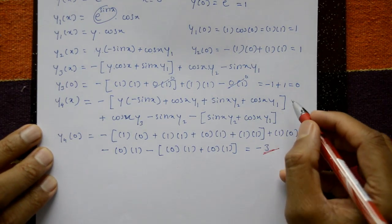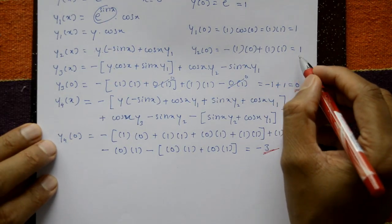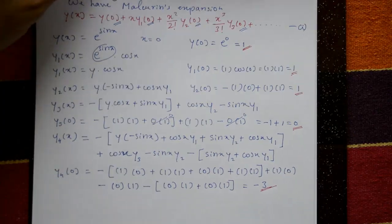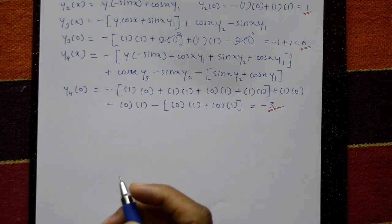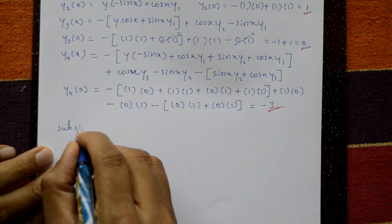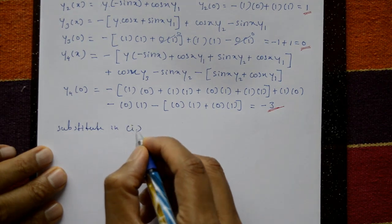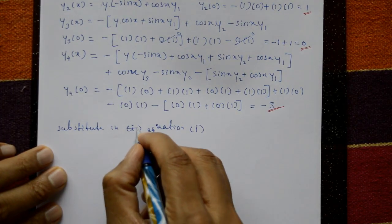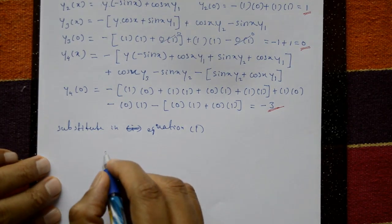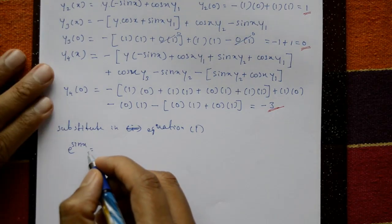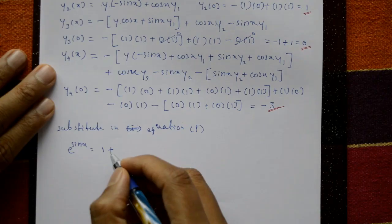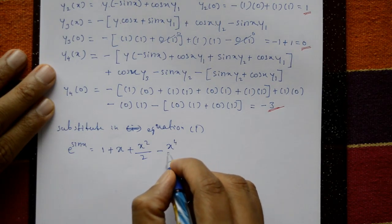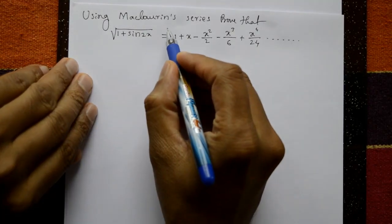Now substitute y(0) = 1, y1(0) = 1, y2(0) = 1, y3(0) = 1, y4(0) = 3 into equation number 1. We get: e^(sin x) = 1 + x + x²/2 − x⁴/8. This is the required solution using Maclaurin's series.